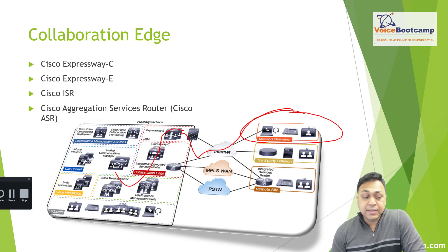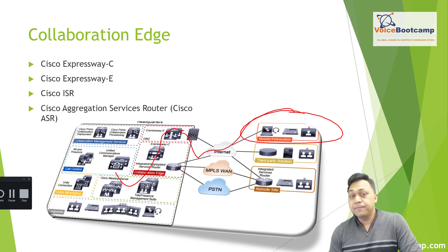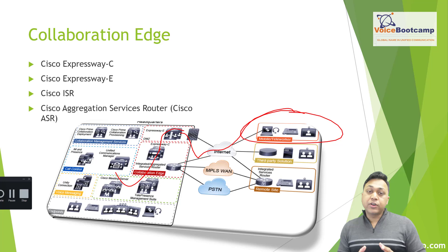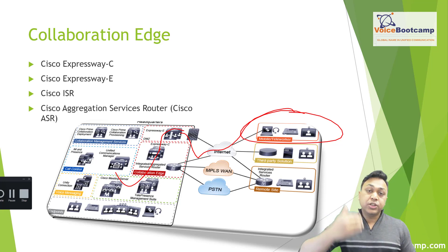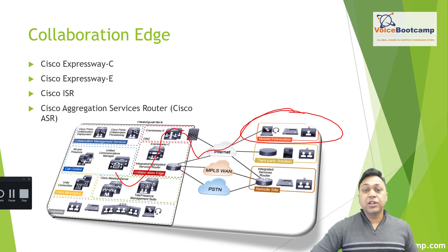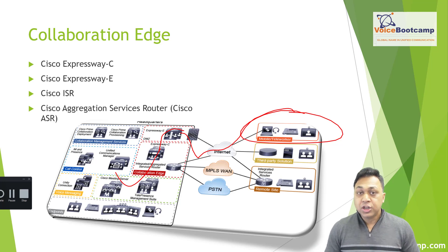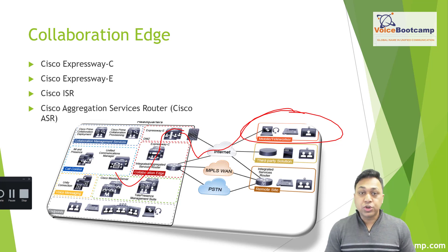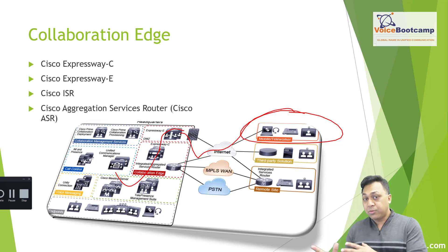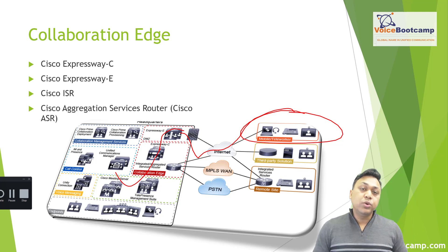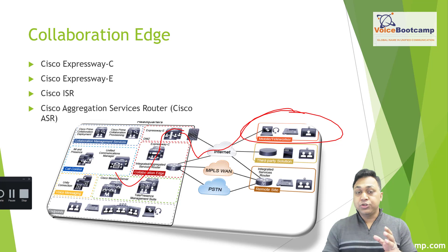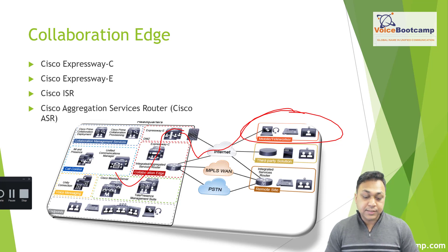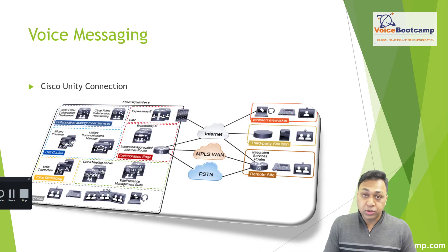One advantage of using Expressway E and C is that you don't have to depend on a VPN server. You simply need a Jabber client or soft client, which will register across the internet using SSL or TLS protocol, connecting to your organization as if internally while providing secure communication. We'll cover more details about Expressway C and E in another module of CCNP Collaboration.